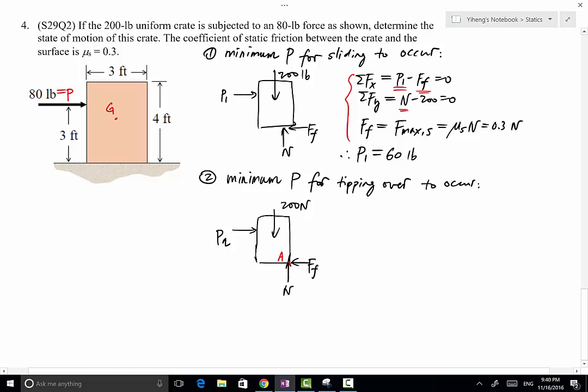Frictional force, we draw it for the sake of completing the free body diagram, but in the situation when tipping over is about to occur, frictional force does not matter. And we do not need to do force equilibrium equations, but we can write one moment equilibrium equation about point A. Normal force and frictional force both have lines of action passing through this point, therefore they do not have moment about point A.